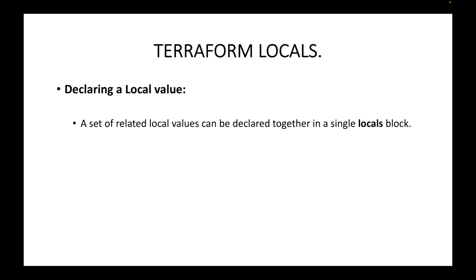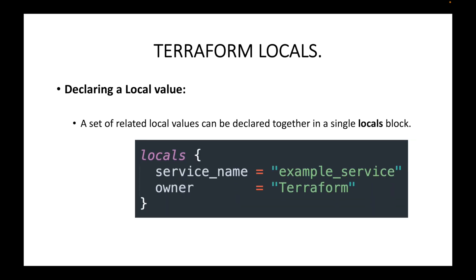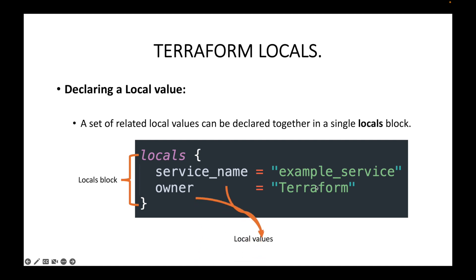Now, if you want to set your local values within the configuration file, we make use of the locals block. This is how we can declare Terraform locals within your configuration file — we use the keyword locals, and then within the body we define the variable name and the variable value or expression. For example, service_name equals a static value, and owner equals another static value.